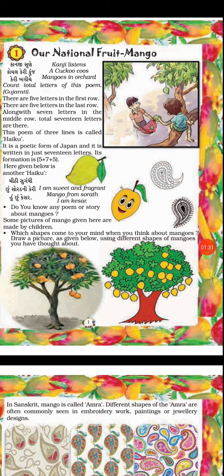One more haiku is given: 'Mithi, Sugandhi, Chuun Soratni Keri Huun, Chuun Kesar.' What does it mean? I am sweet and fragrant, mango from Surat, I am Kesar. Fragrant matlab khushbudar mango jo hai, Surat ka woh Kesar hai.